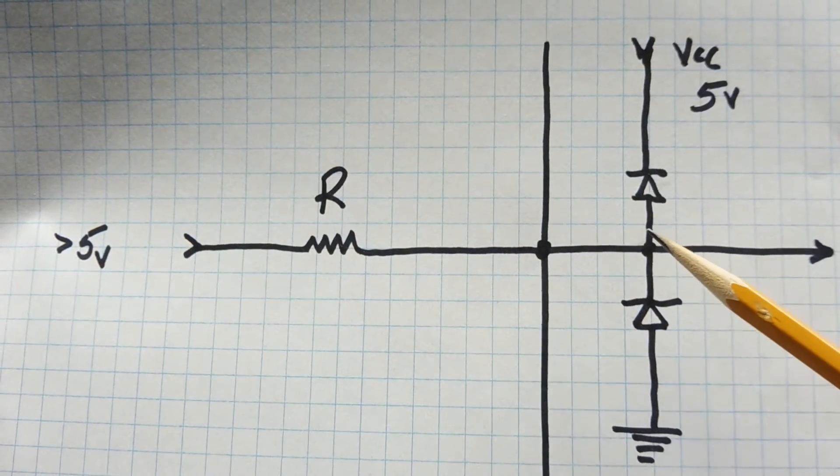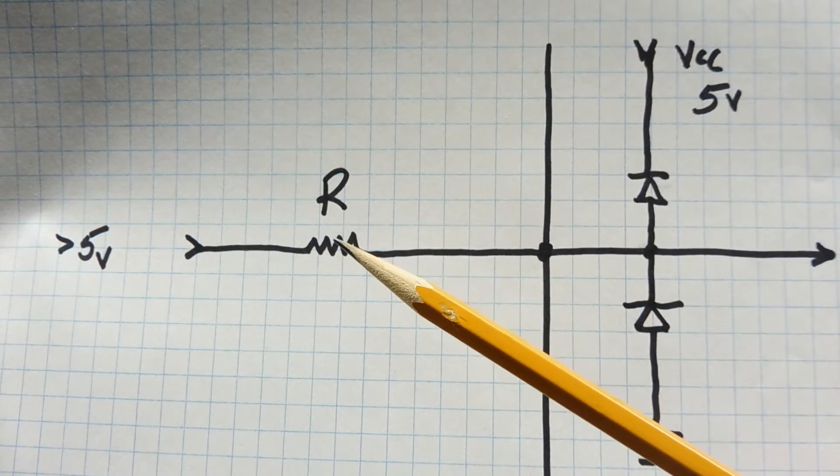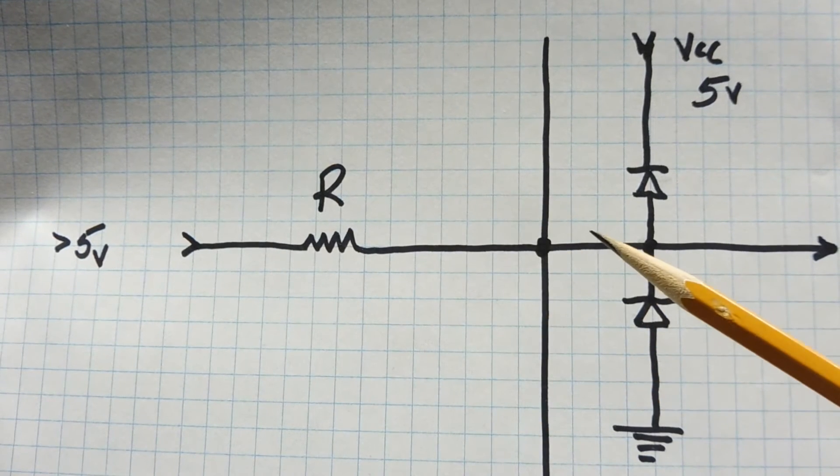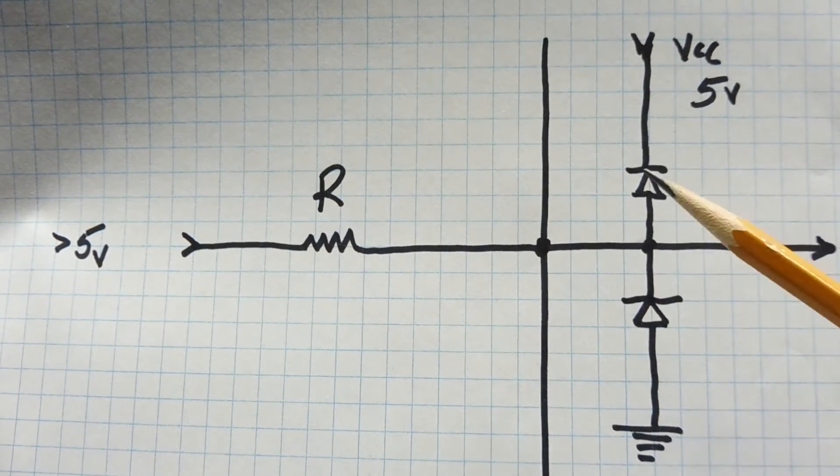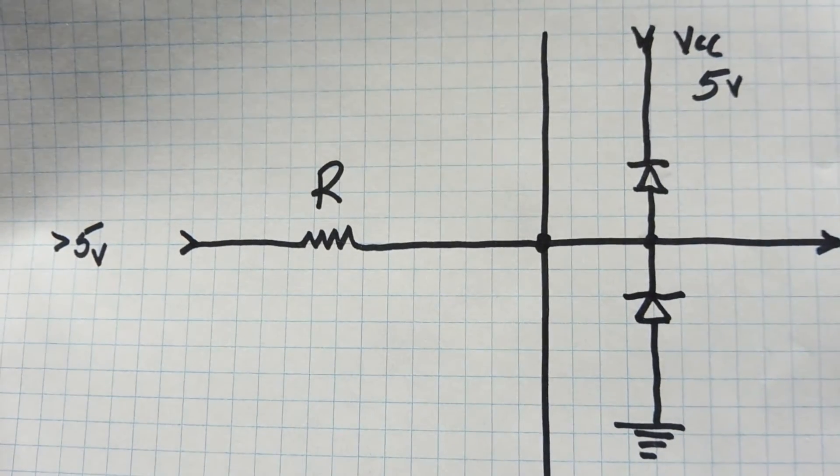If you feed 10 volts at the input of the resistor, this point will be clamped at 5.6 volts, and the rest of the voltage will be dropped across the resistor. This will current limit the current into the microcontroller pin, and it won't affect the diodes in any way. So that's another way we could increase the input voltage of the GPIO pin.